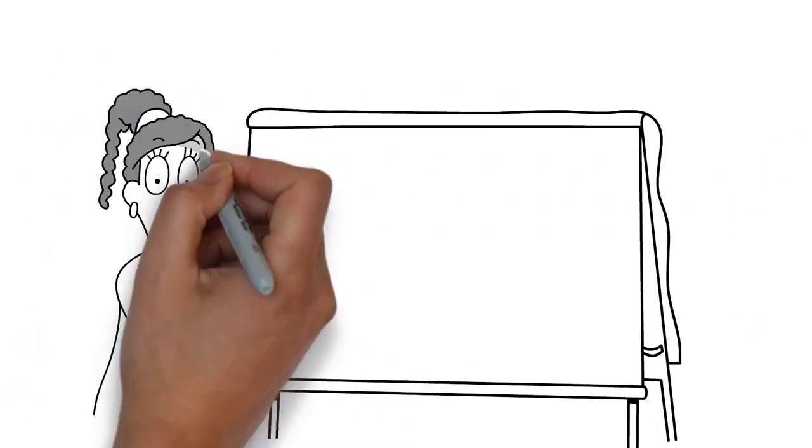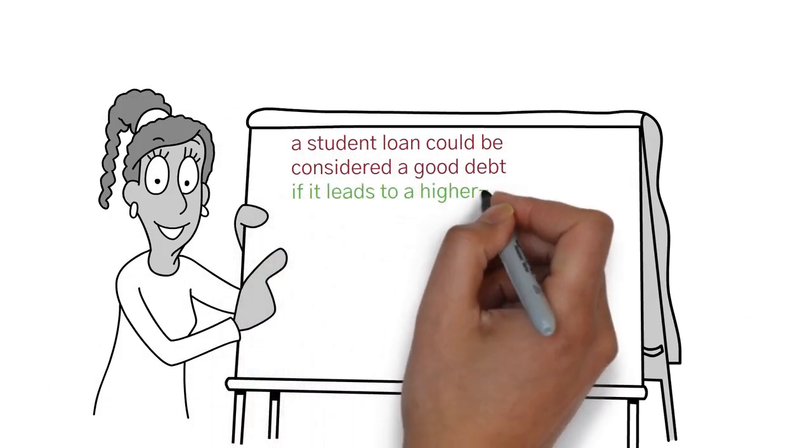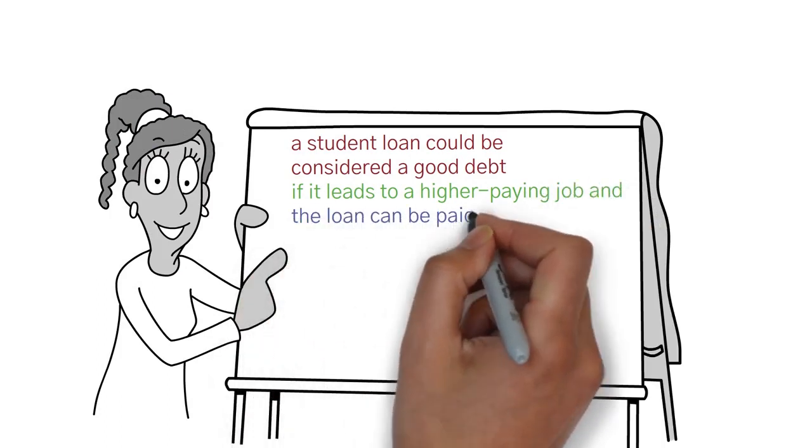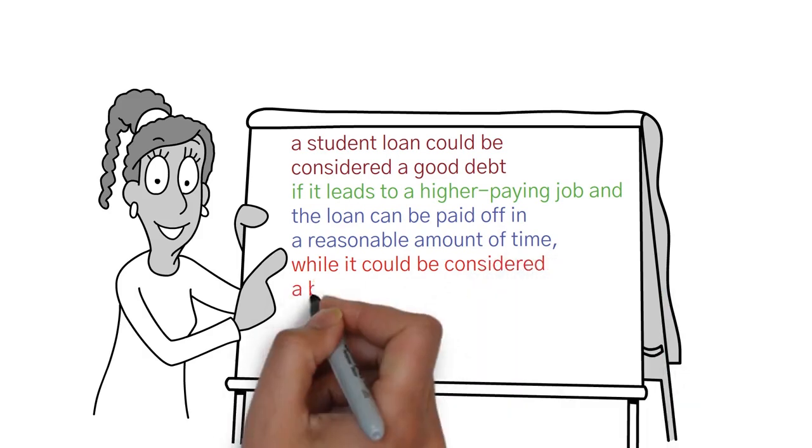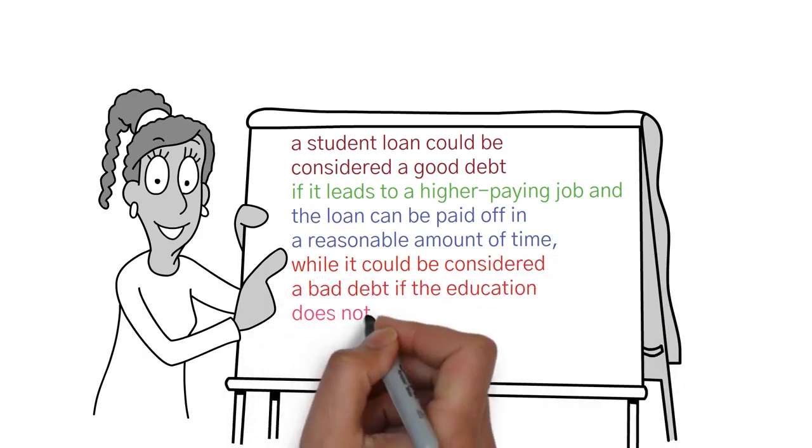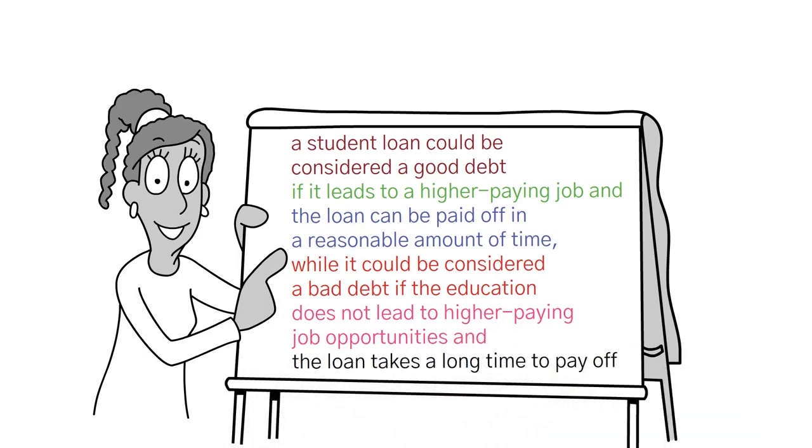Similarly, a student loan can be considered a good debt if it leads to a higher paying job and the loan can be paid off in a reasonable amount of time, while it could be considered a bad debt if the education does not lead to higher paying job opportunities and the loan takes a long time to pay off.